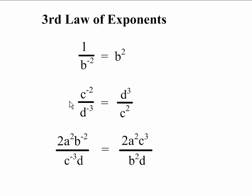In the next example, we have a term with a negative exponent in the numerator and another in the denominator: c to the negative 2 over d to the negative 3. In this case, the c to the negative 2 goes down into the denominator and the negative 2 becomes a positive 2. While at the same time, the d to the negative 3 moves up into the numerator and becomes d to the positive 3. We can apply the third law of exponents twice in the same expression.